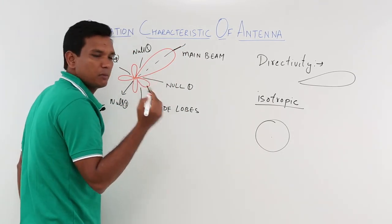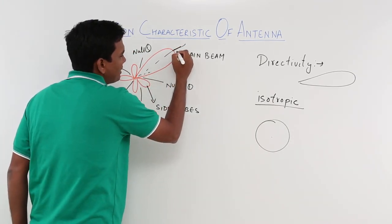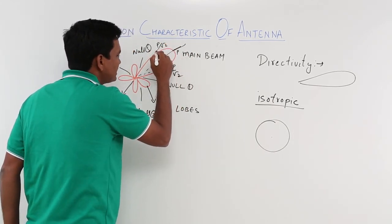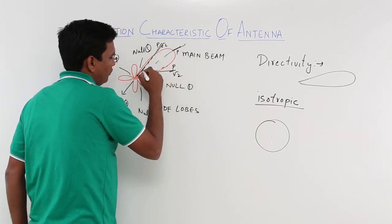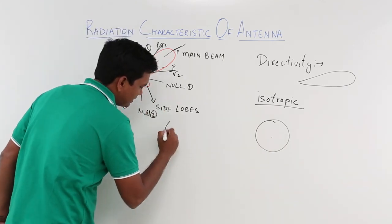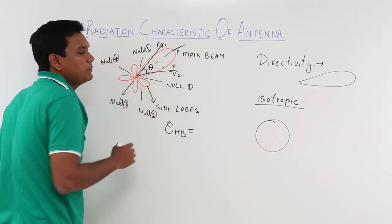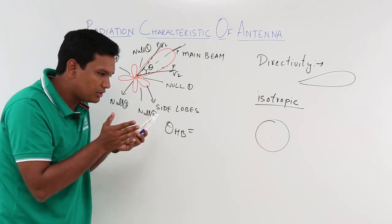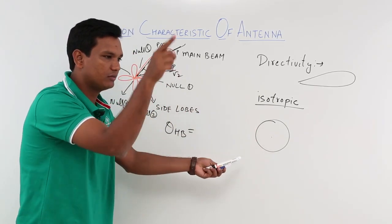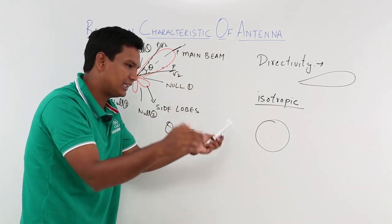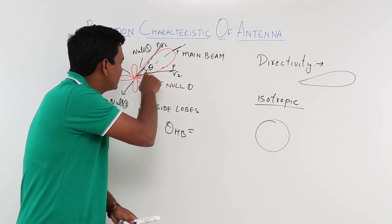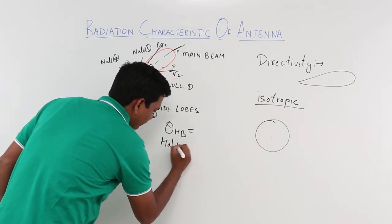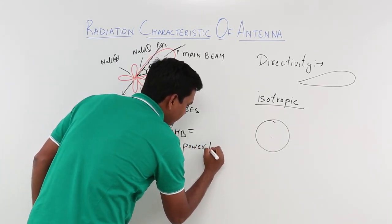Now, if I consider in terms of power, at the maximum point the power is p. At the half-power points on either side it will be p by root 2. This angle — theta — is called theta HPBW, which stands for half power beam width. Remember, this will be a conical shape because you are projecting like this, it will look like a cone. So this angle is called the half power beam width.